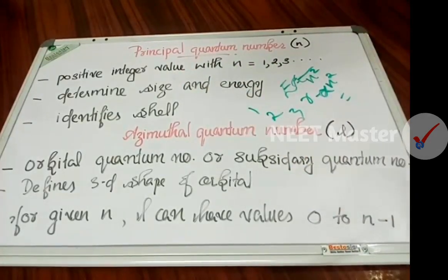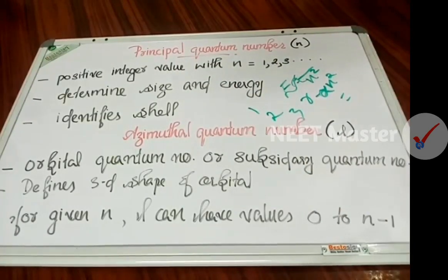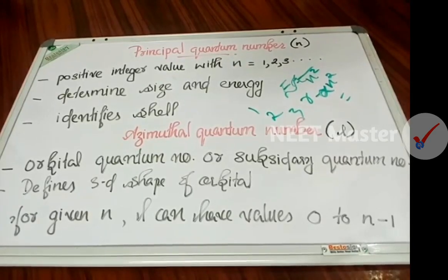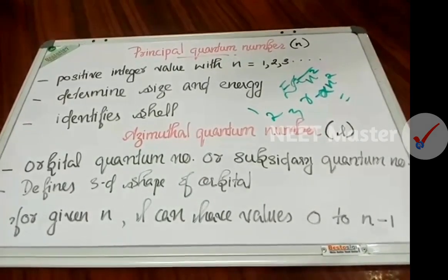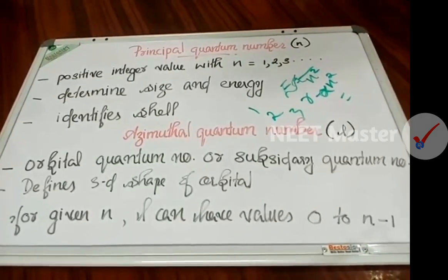What is the size? If you use the size and the value of the principal quantum number, we can determine the size of the orbital using the principal quantum number. That's the basic idea.